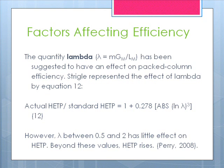The quantity lambda, equal to m·G_M over L_M, has been suggested to have an effect on packed column efficiency. Striegel represented the effect of lambda through an equation where actual HETP over standard HETP is equal to 1 plus 0.278 times the absolute value of ln(lambda) cubed. However, a lambda between 0.5 and 2 has little effect on HETP. Beyond these values, HETP rises.